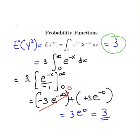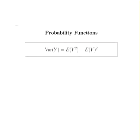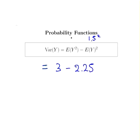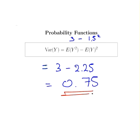So the variance of y equals 3 minus 2.25 — remember, that's 1.5 squared from before — and that is simply equal to 0.75. The variance of y is 0.75.